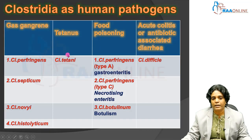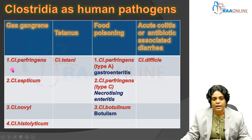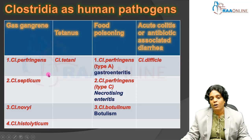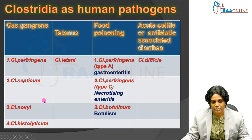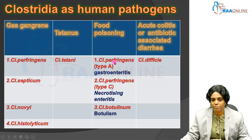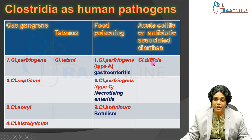Let's look at the different species of Clostridia which can cause human infection and their manifestations. Gas gangrene is a polymicrobial infection caused by Clostridium perfringens, septicum, novii, and histolyticum. Tetanus is caused by Clostridium tetani. Some species cause food poisoning — for example Clostridium botulinum causes botulism. Some types of perfringens like type A cause gastroenteritis and type C causes necrotizing enteritis. Clostridium difficile causes acute colitis or antibiotic-associated diarrhea.